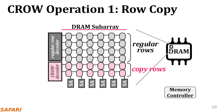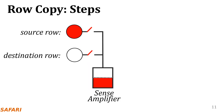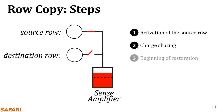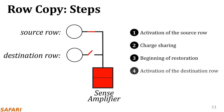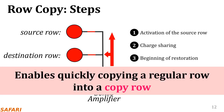The first of the two operations that CROW enables is copying the content of an entire regular row into a copyrow. To initiate the row copy operation, the memory controller issues the new ACT-C command that the CROW substrate provides to the DRAM. This command first activates a regular row. After the data is latched in the sense amplifiers, the command activates a copyrow, resulting in the sense amplifiers writing the data of the regular row to both of the open rows. For simplicity, let's assume DRAM rows have only a single cell. Our goal is to copy data from the source row to the destination row. First, the source row is activated and shares its charge with the sense amplifier. Then the sense amplifier starts restoration. At this point, CROW enables the destination row, resulting in the sense amplifiers restoring both rows to the same value of the source cell. So CROW enables quickly copying a regular row into a copyrow.